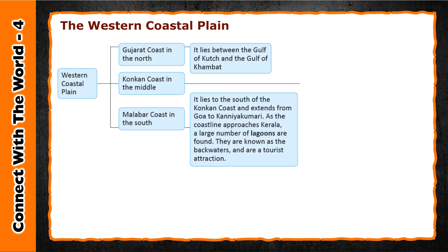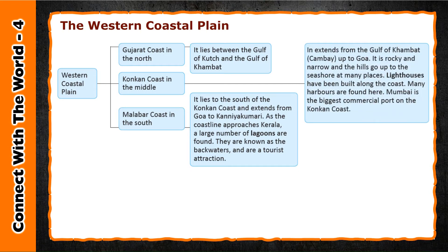The Gujarat coast lies between the Gulf of Kutch and the Gulf of Khambat. The Konkan coast extends from the Gulf of Khambat up to Goa. It is rocky and narrow, and the hills go up to the sea shore at many places. Lighthouses have been built along the coast and many harbors are found here. Mumbai is the biggest commercial port on the Konkan coast.